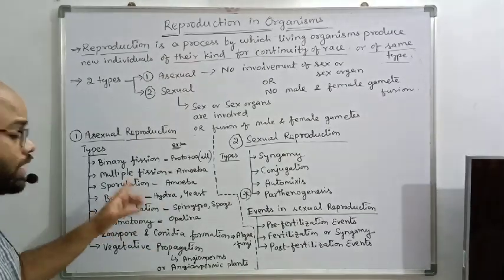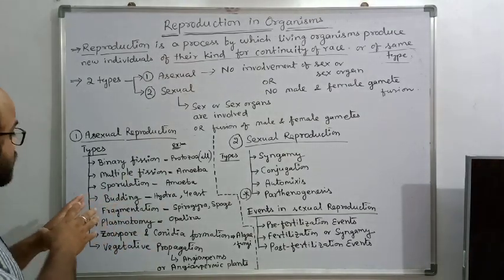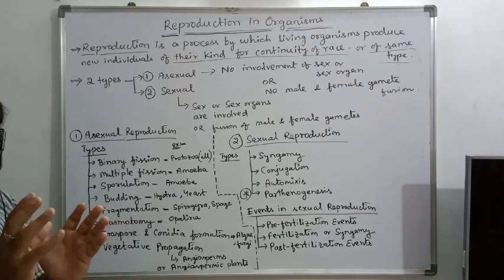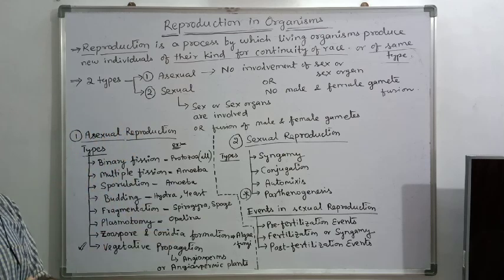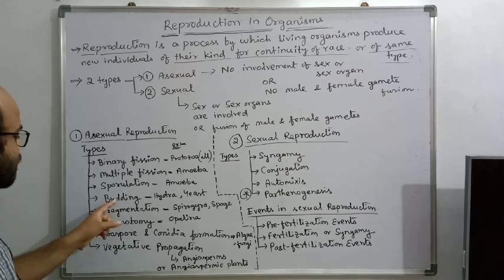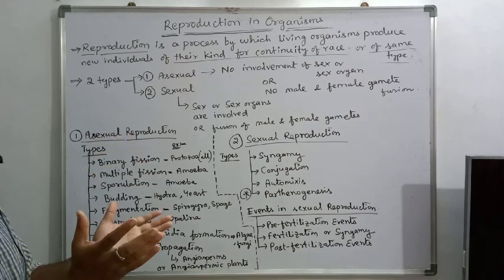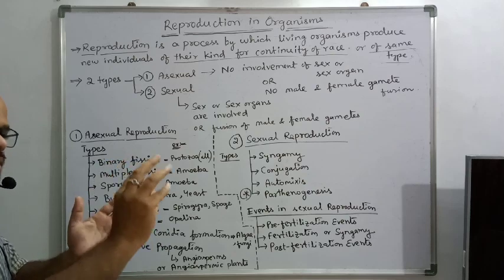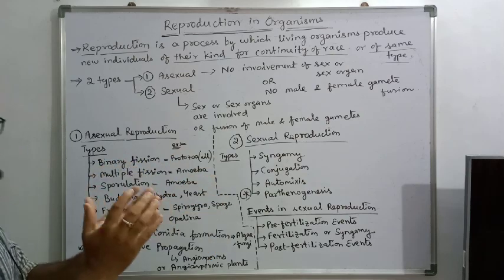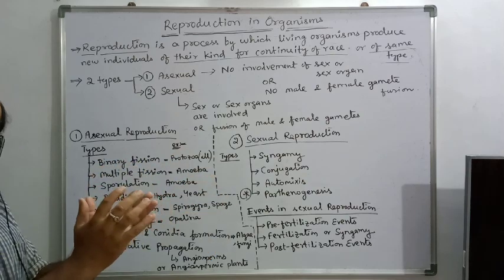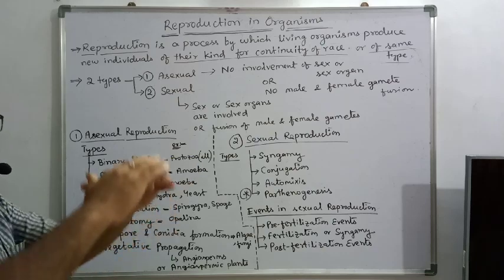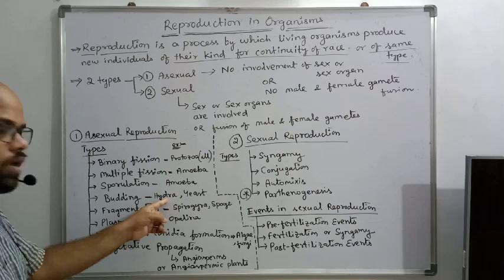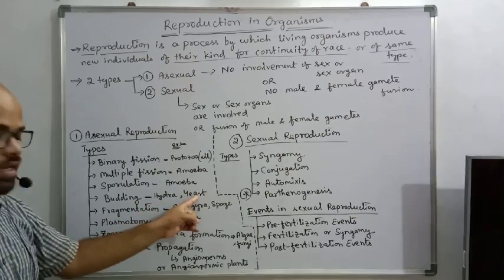Budding is an important asexual reproduction method. A bud is an outer growth — budding involves an outer growth process where that outer growth will be separated from the existing living organism to form a new living organism. The most common examples are Hydra and yeast.